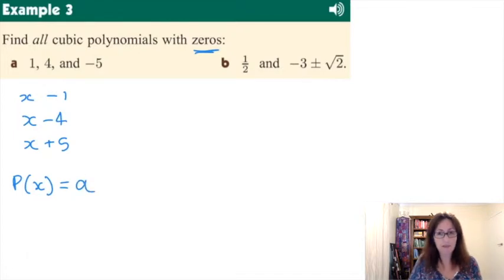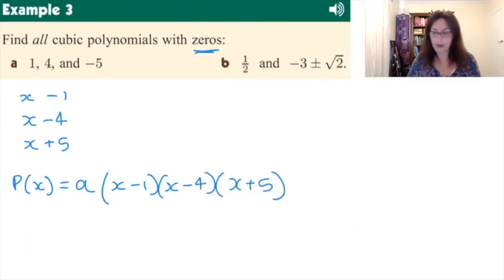the a out the front, because that's the dilation factor, if you like, and we're not able to solve that at this point in time. And then you write it as a polynomial with all its linear factors. And that's how we answer that question. However, one point about a, it can't be equal to zero, because if it was, it wouldn't be a cubic anymore.